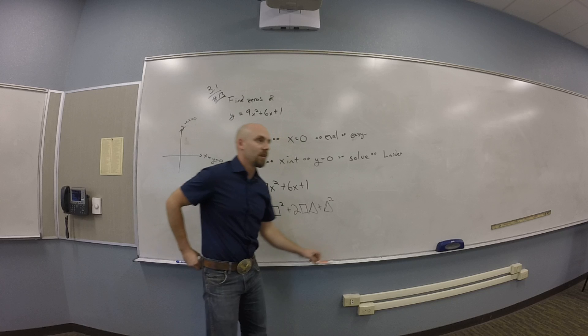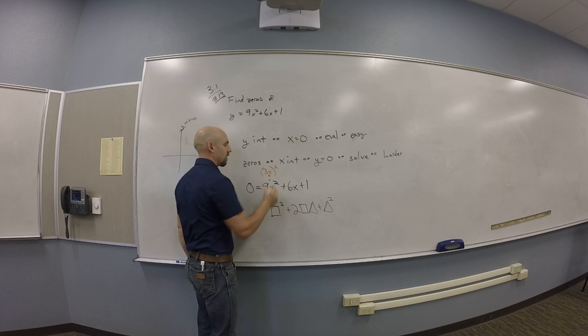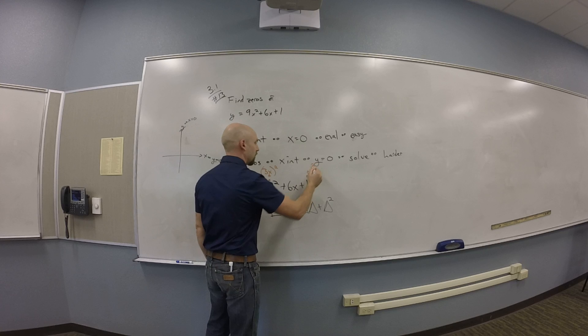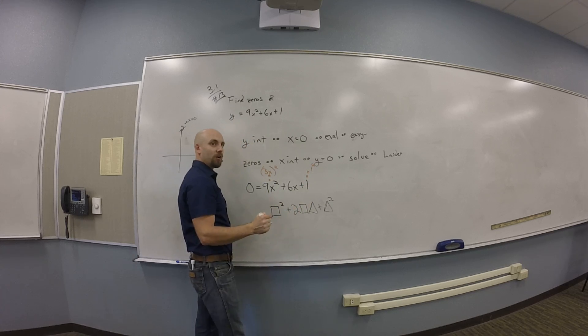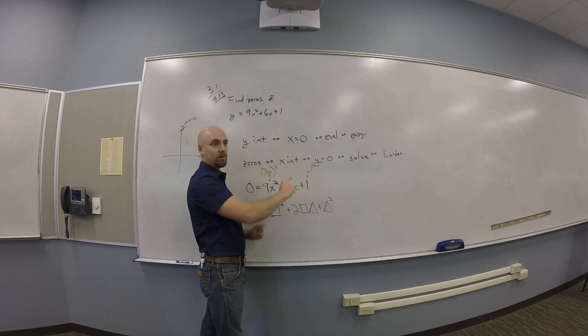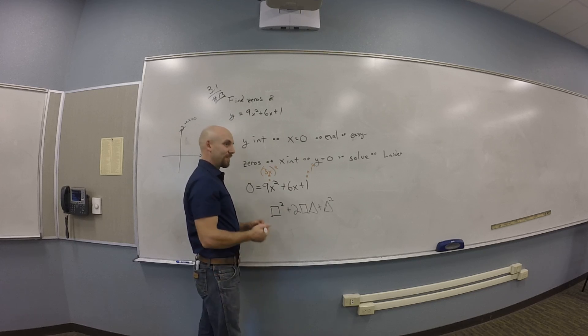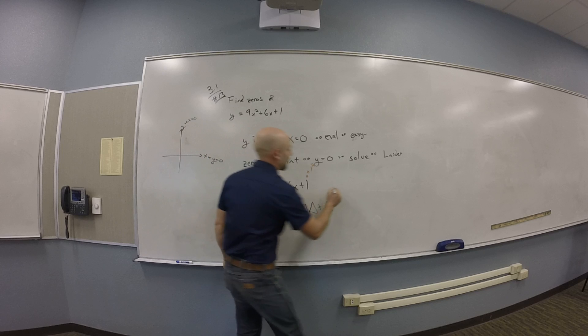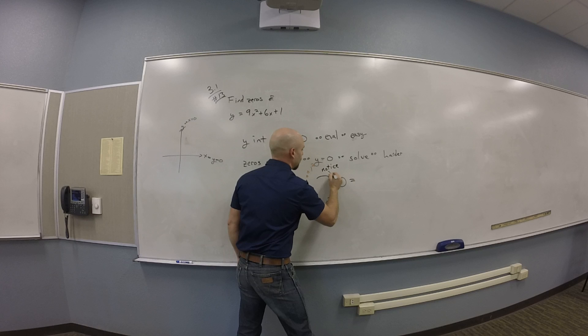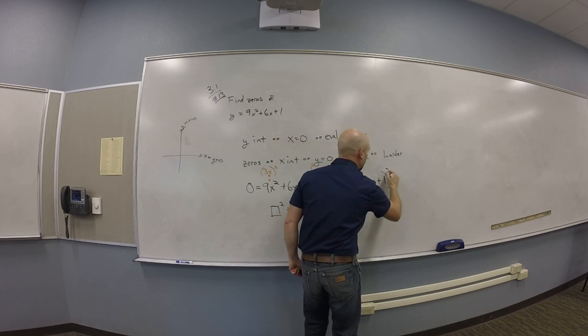So a perfect square trinomial looks like something squared at the left side, something squared at the right side, and in the middle, twice the first thing times the last thing. Which you might note here is, what's 9x squared? 3x squared. Yeah, that's 3x quantity squared. And 1 is? 1 squared. And so you might note, okay, is this thing in here twice 3x times 1? It is indeed. So if I notice that PST, then I'm getting 0 equals 3x plus 1 quantity squared.